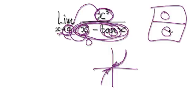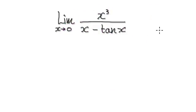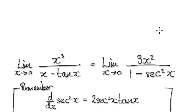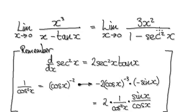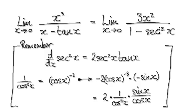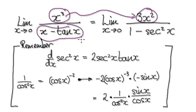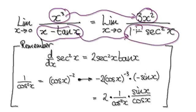So this is an indeterminate form, so we've got to use L'Hôpital's rule. Using L'Hôpital's rule, differentiate this — that will then take you to here. Differentiate this whole thing here, and it will take you to here.